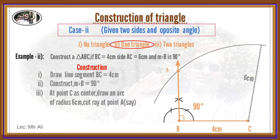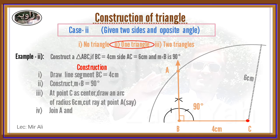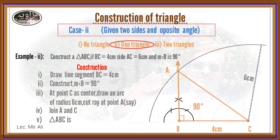The arc intersects at point A. From point A to point C, draw a line segment. Thus one triangle is formed, and this is the required triangle.